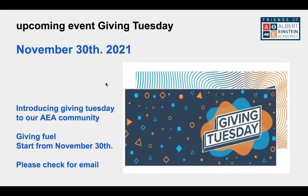Vamos a introducir a la comunidad de AEA un nuevo evento: el martes de dar. Básicamente es una forma de retribuir un poco a la escuela. Si toda la escuela nos diera un dólar, se convertiría en algo excelente. Comenzaremos esto para el 30 de noviembre. Les vamos a mandar el enlace para este evento lo más pronto posible.